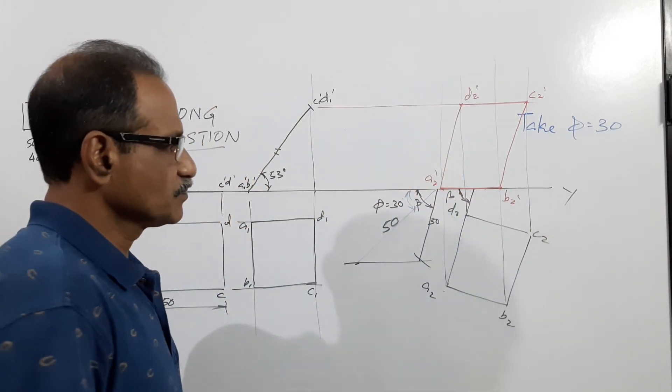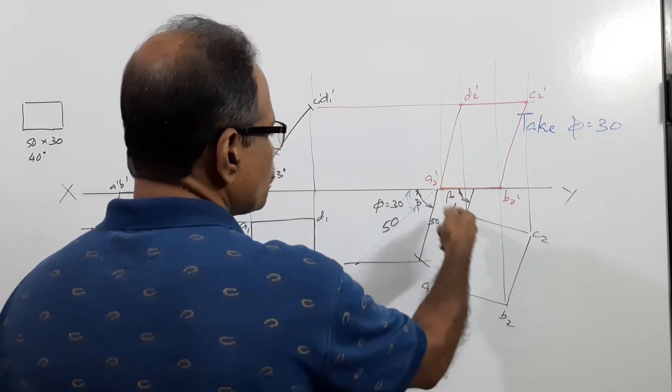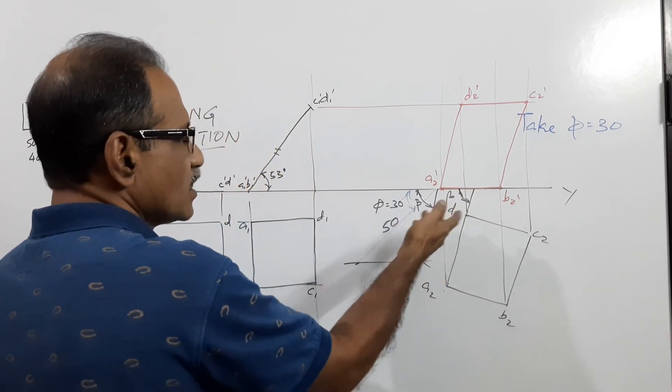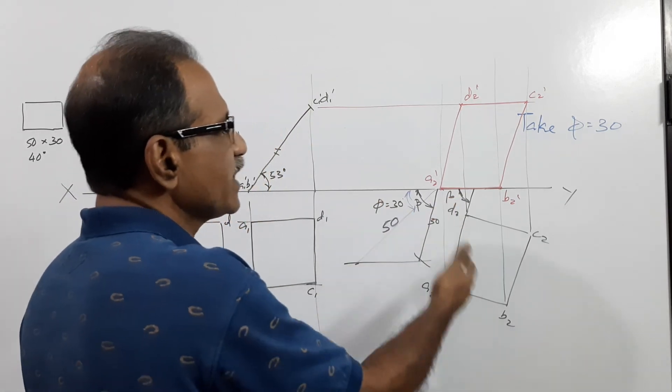This is the variation. A2D2 makes beta equals something, I don't know how much, it may be around 85 or something. D strikes the XY line and project the final elevation. So what you have done? You have corrected the question instead of phi equals 40, take phi equals 30 and draw. That is one way of doing it.